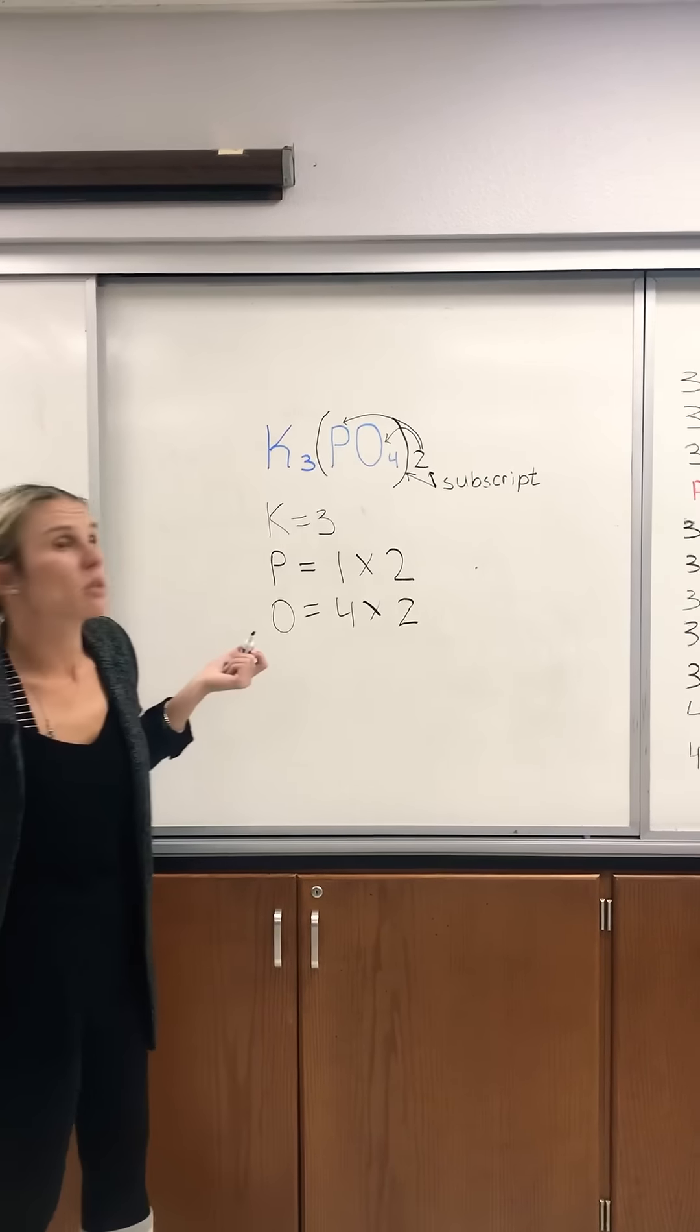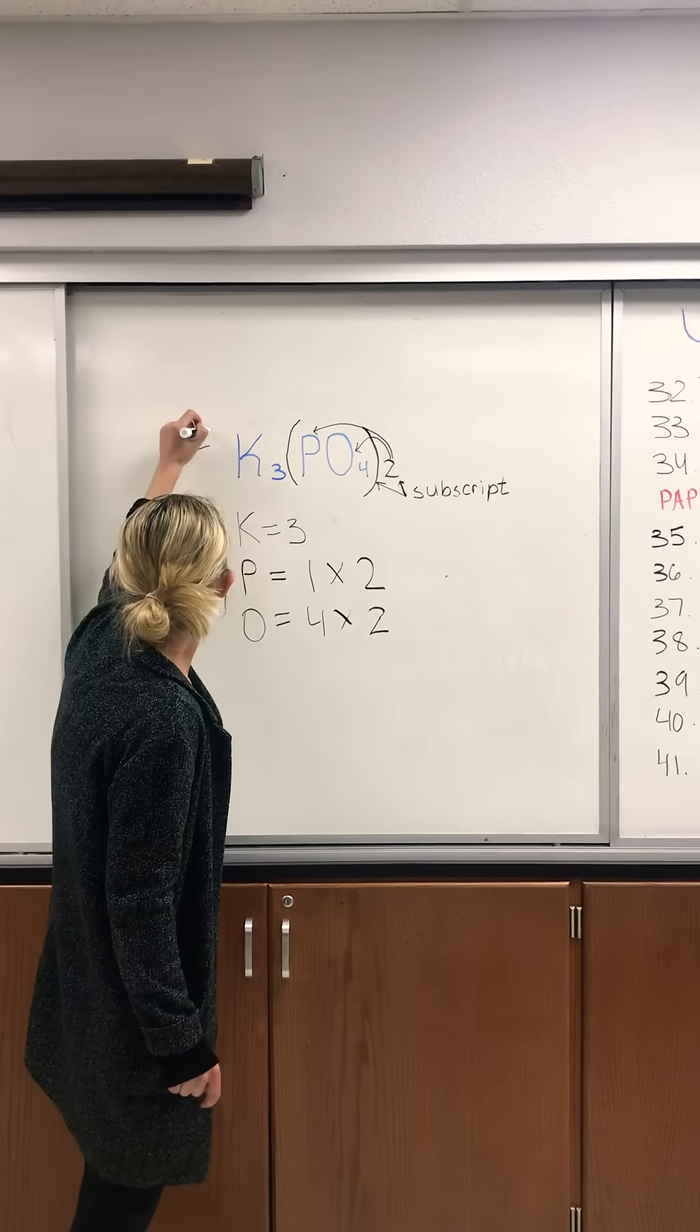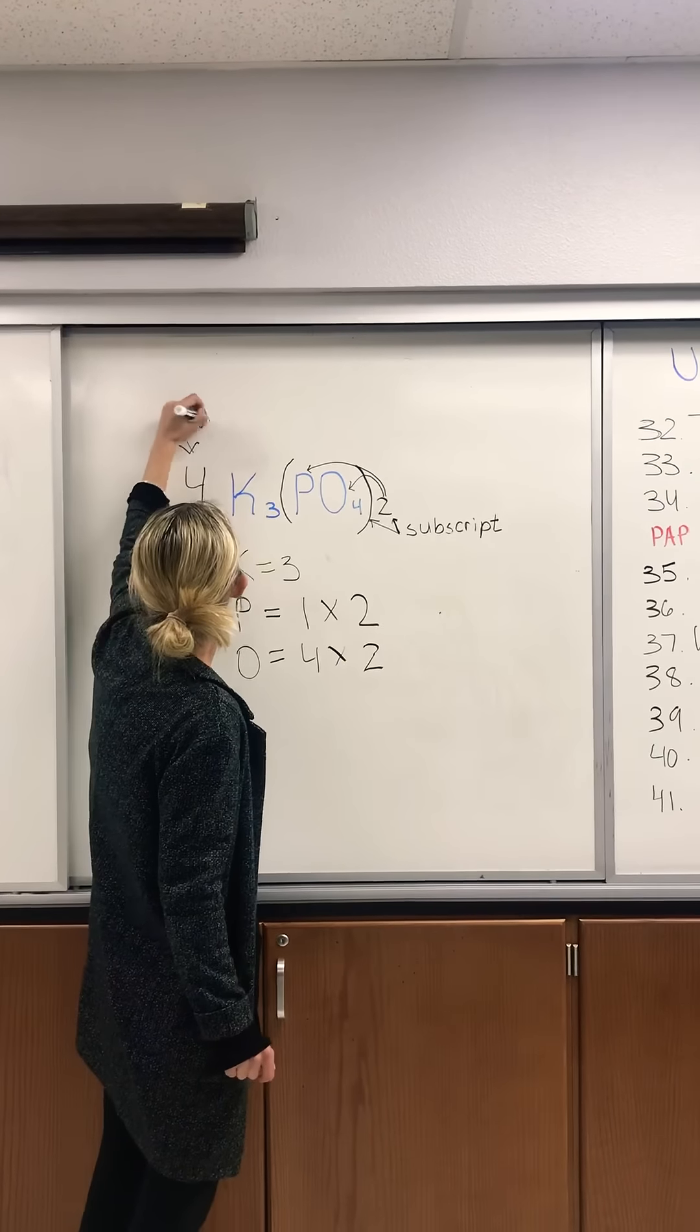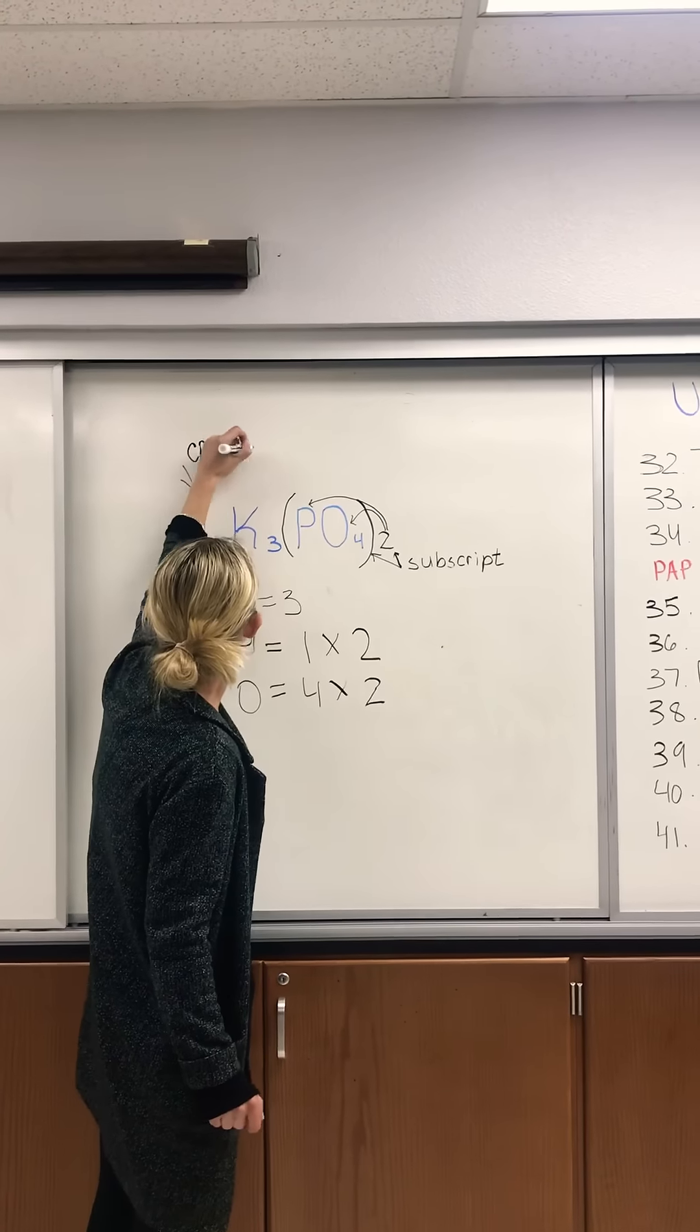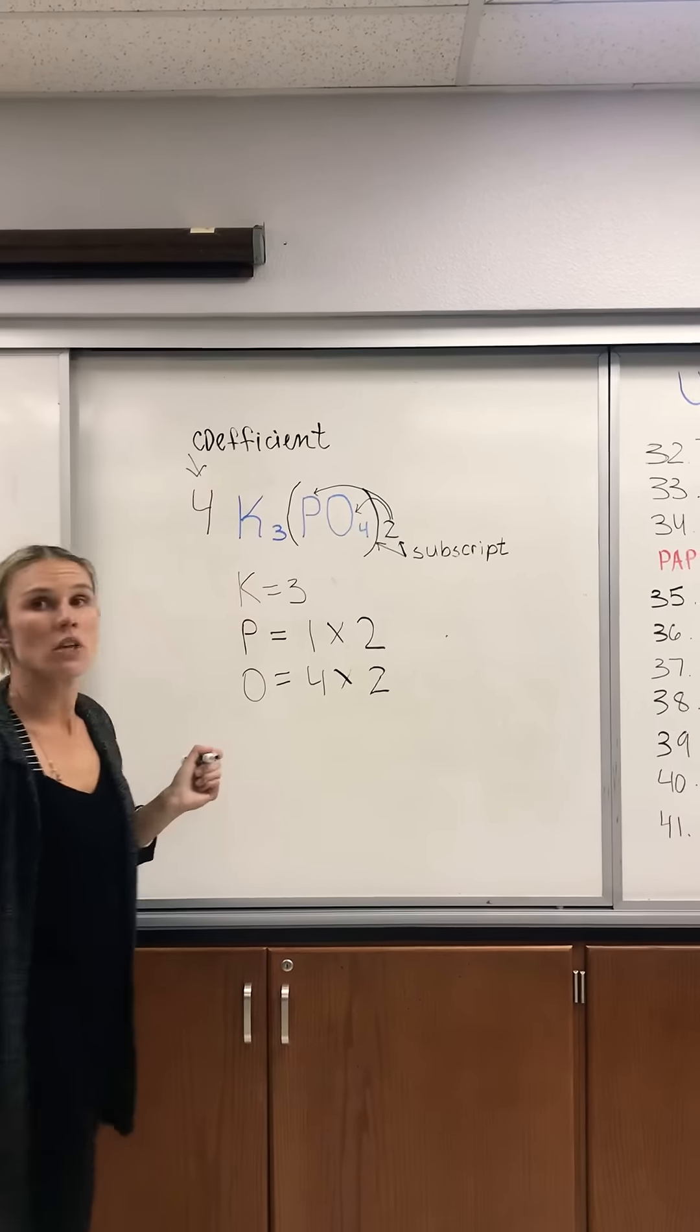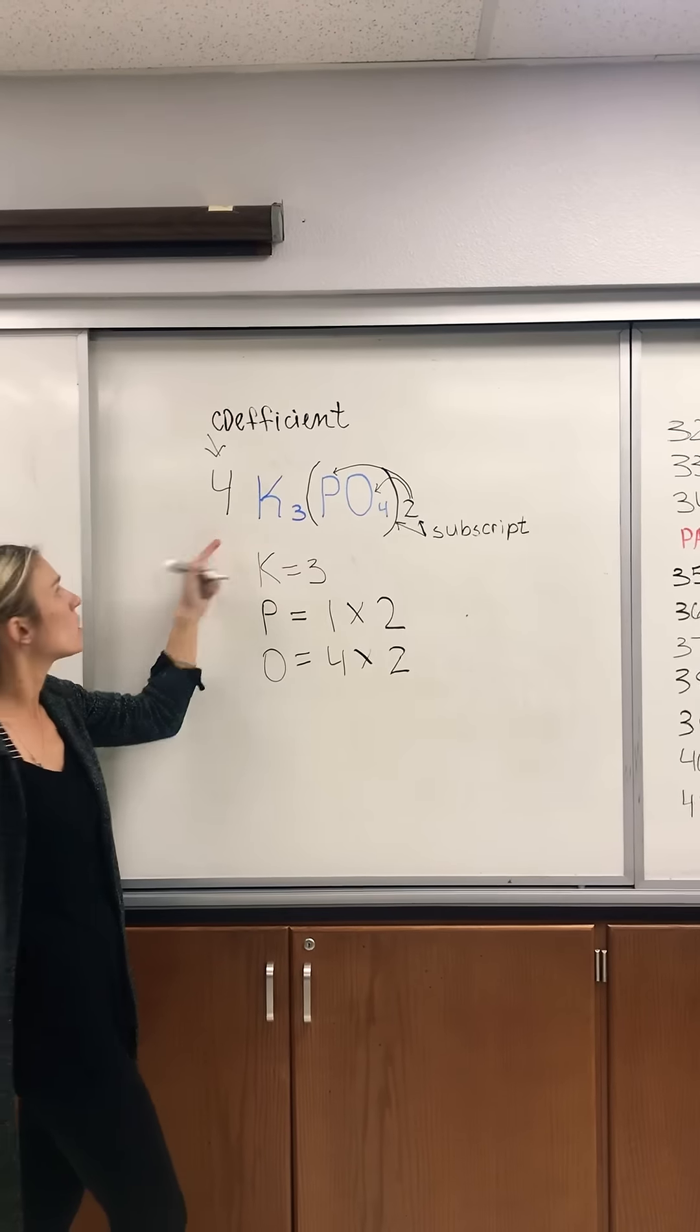Last case. Sometimes you're going to get a big number in front of the equation. This number is called a coefficient. Unlike subscript, the coefficient distributes to every single number in the formula.